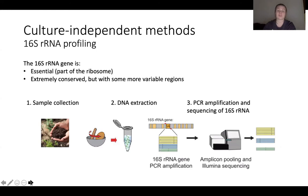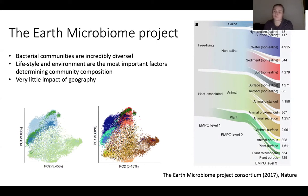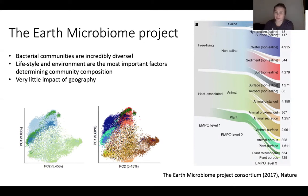By now, there are thousands and thousands of publications that have used this method, and global initiatives have emerged, such as the Earth Microbiome Project. This is a collaboration of researchers from all around the world, with the ambitious aim to map out all microbial life on Earth. A lot of samples have been collected from all kinds of environments, and we've already learned a few things — bacterial communities are incredibly diverse, which makes it difficult to find patterns in their composition, but some patterns have emerged.